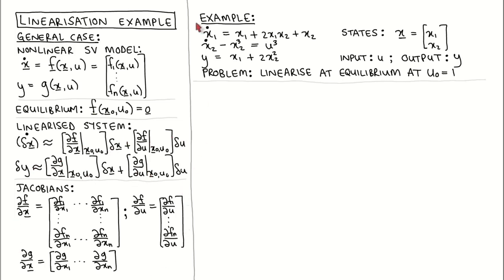The example system we look at today is a second order nonlinear system with states x1 and x2, input u, and output y. The dynamics of the system is described by these two differential equations, and the output is related to the states by this equation. The problem we want to solve is to linearize this system at the equilibrium corresponding to the input equal to 1.